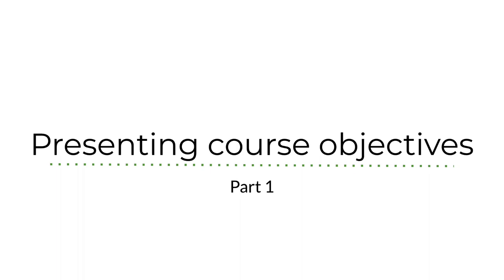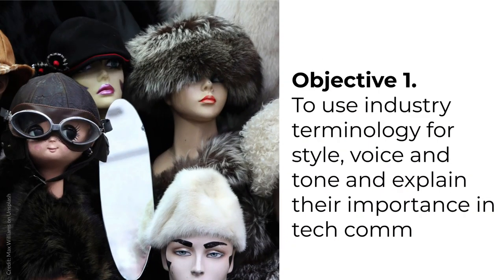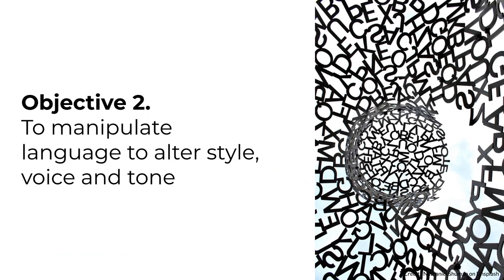Let's start with the goals of the course. The first objective is for you to use industry terminology for style, voice, and tone and be able to explain their importance in tech comm. This is where we'll start the course and it's the focus of most of the activities during modules one and two. The second objective is for you to manipulate language to alter style, voice, and tone. You'll begin that work in module three and will continue flexing your writing muscles throughout the remainder of the course.